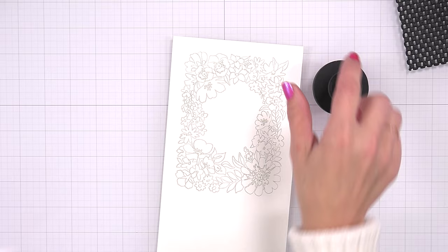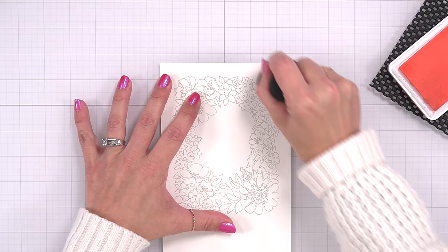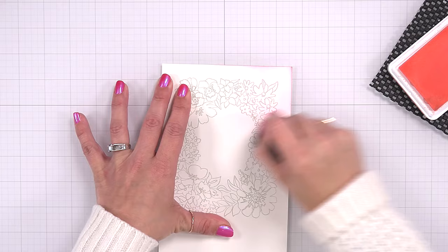Before I get into these stencils to color in my image, I am going to create kind of a base layer. If you were looking at this in a painting perspective, you would almost call this under painting, so I'm going to call it under ink blending. I'm just going to give this a light layer of color.